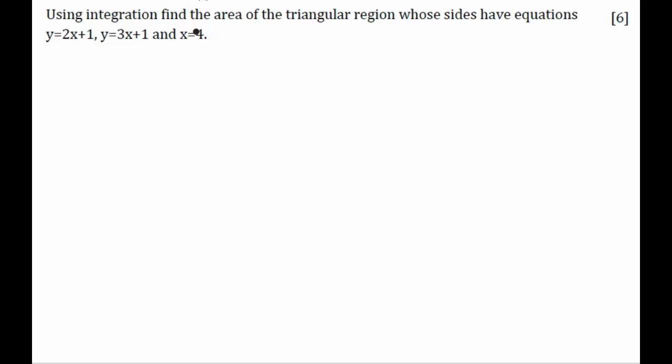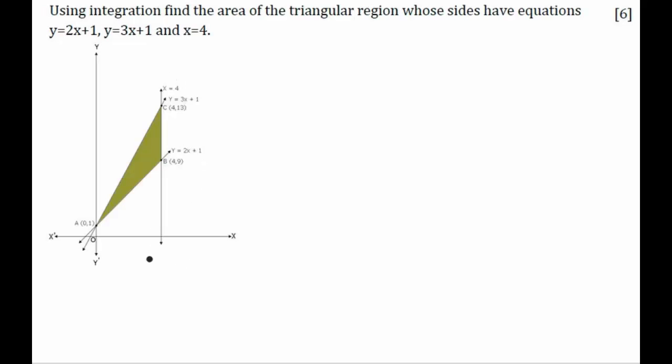First of all, let us plot these lines: y = 2x + 1, y = 3x + 1, and x = 4 is going to be a straight line, and this green triangle is going to be formed.